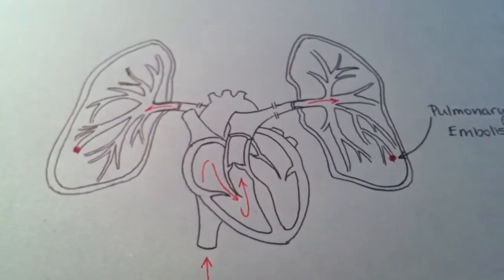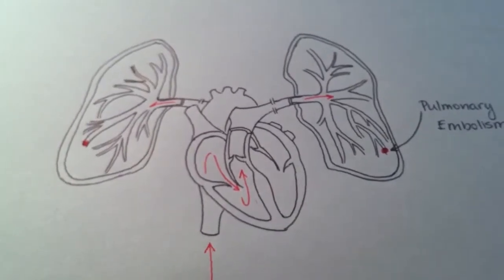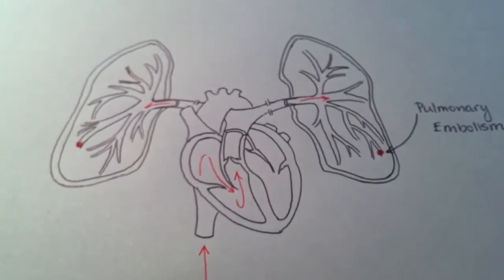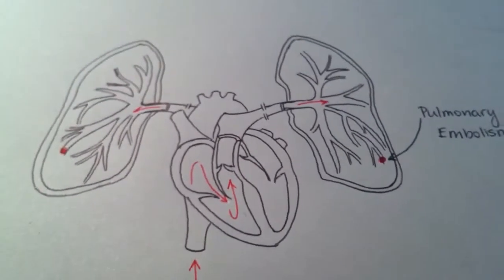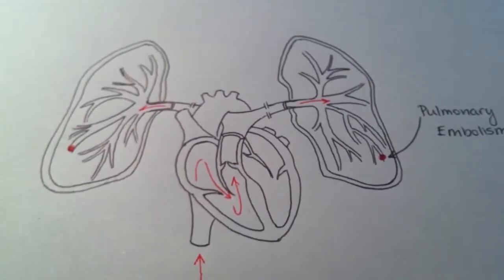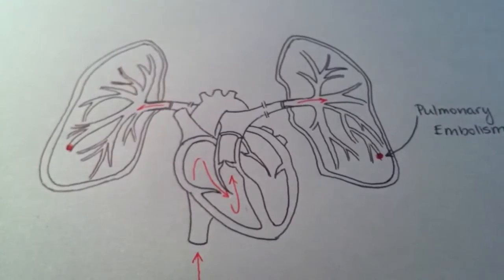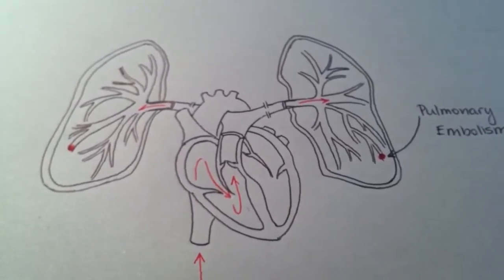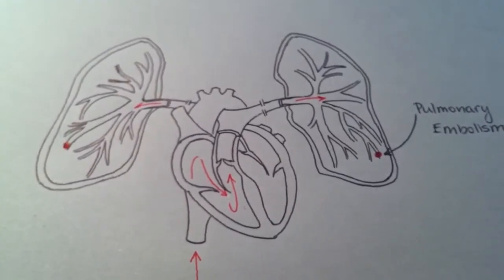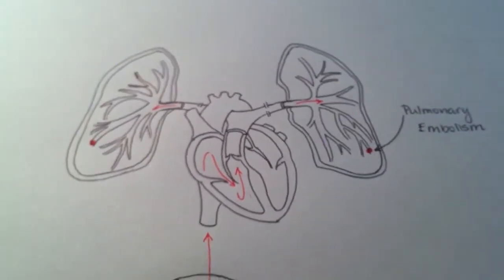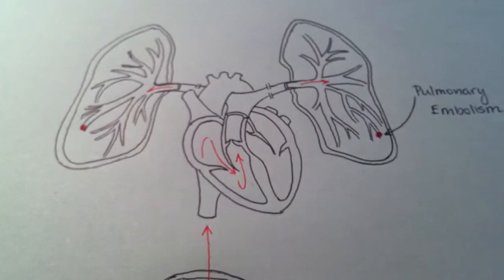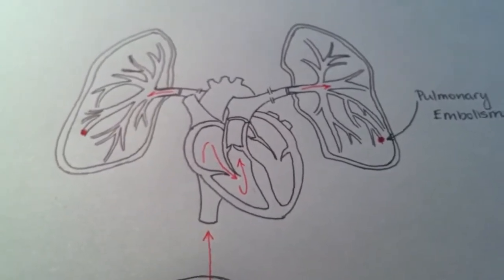And then it forms what we call pulmonary embolism. If the clot gets stuck there it can't return to the heart to go to the brain. By definition, stroke has to do with the brain, and if it doesn't go to the left ventricle to get pumped up into the brain then it can't cause stroke. That's the reason why DVT does not cause stroke.